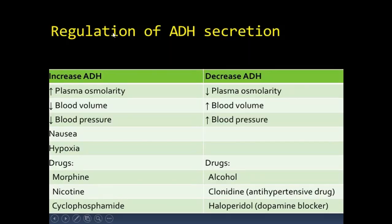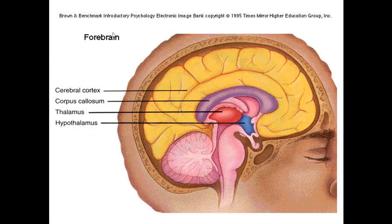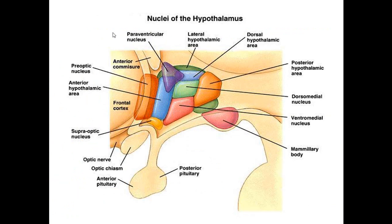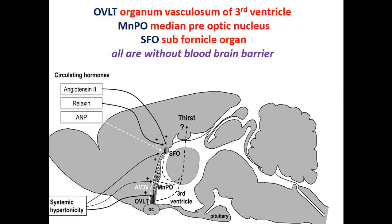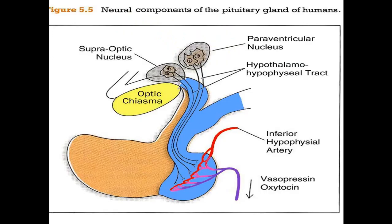ADH is secreted by the hypothalamus. Here you can see the main nuclei: the paraventricular nucleus and the supra-optic nucleus — shown in deep yellow color. These two nuclei are responsible for the production of the hormone ADH, anti-diuretic hormone.